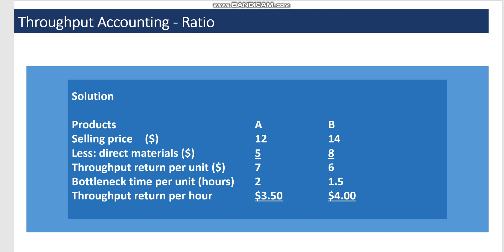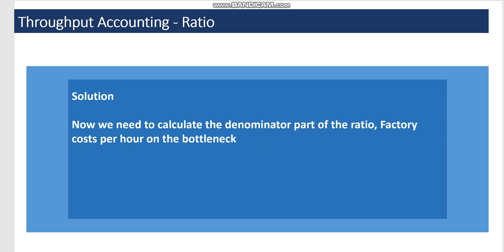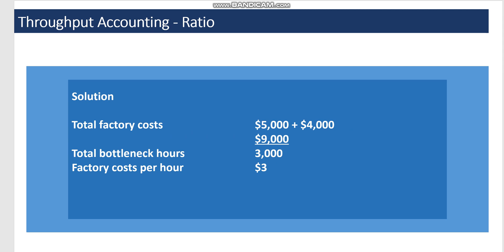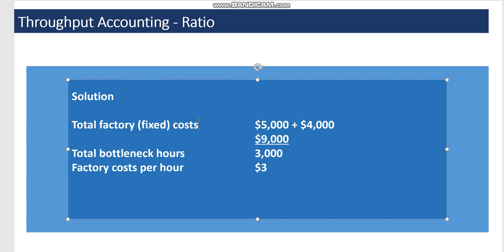Now we calculate the denominator: factory cost per hour on the bottleneck resource. Labor cost is five thousand dollars and overhead cost is four thousand dollars, giving total fixed costs of nine thousand dollars. Dividing by the bottleneck capacity of three thousand hours gives a factory cost per hour of three dollars.